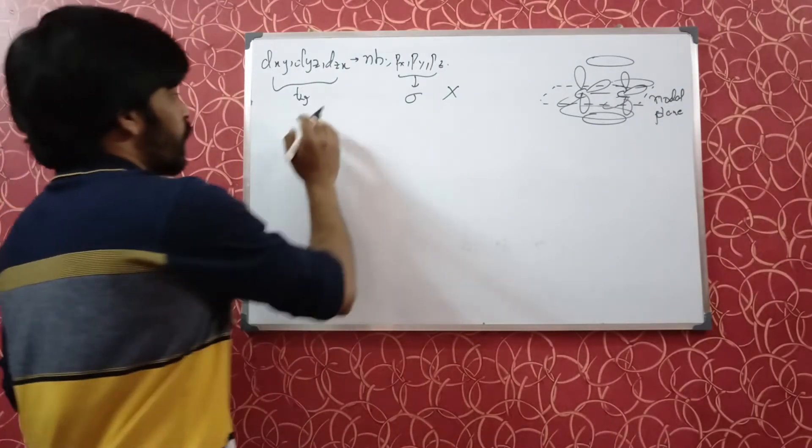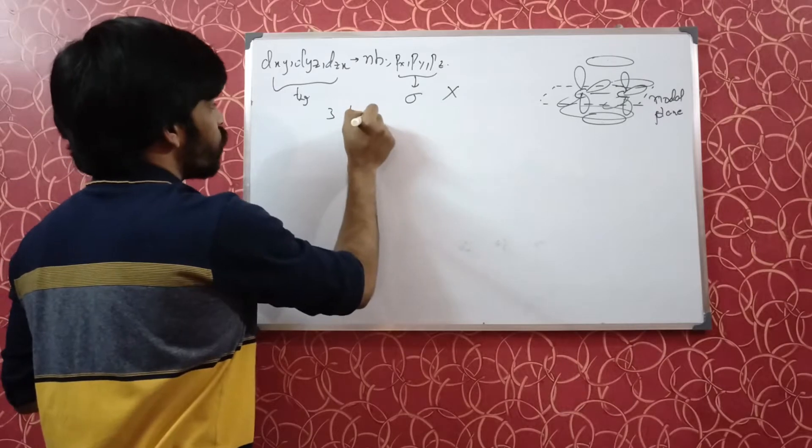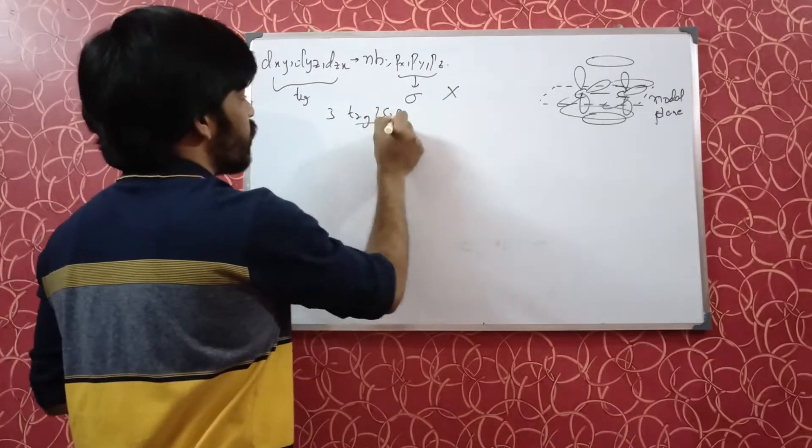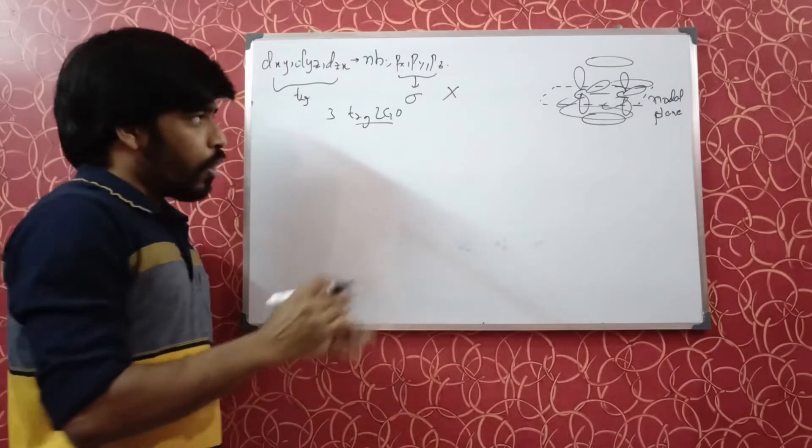That would mean you have three t2g orbitals from metal and you will get three t2g ligand group orbitals. And together they will do linear combination to do the pi bonding.